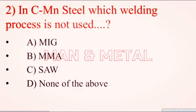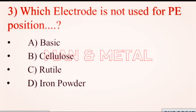Question 2: In carbon manganese steel, which welding process is not used? a) MIG, b) MMA, c) SAW, d) none of the above.